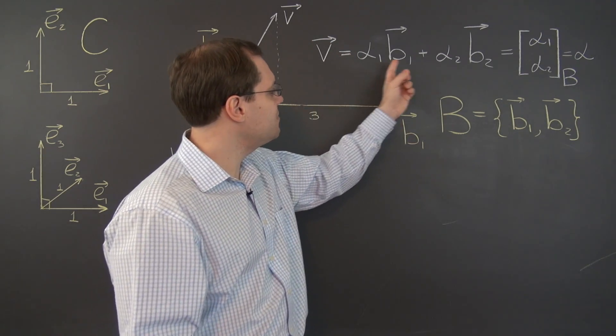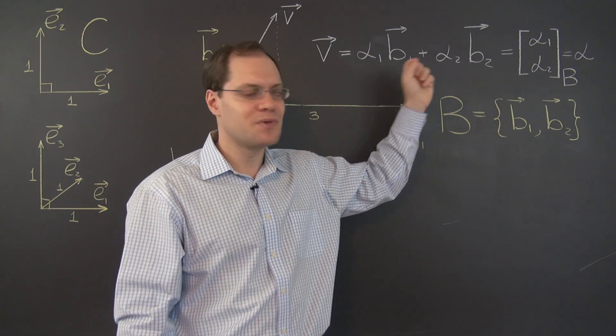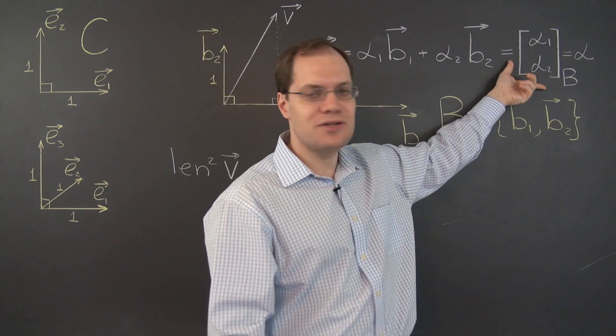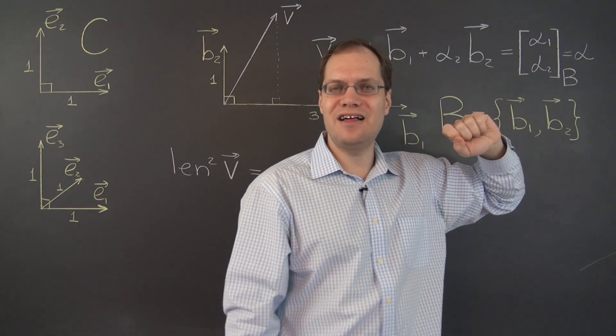Nevertheless, I gave them the same names as before: alpha 1 and alpha 2. I'm still combining them into an element of R2, which I'm still calling alpha.